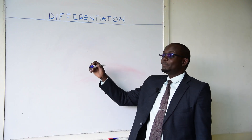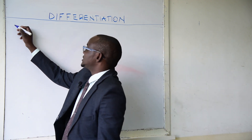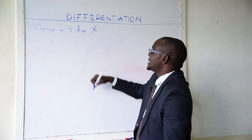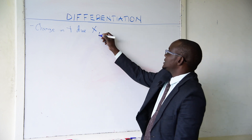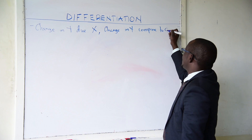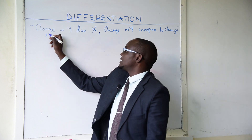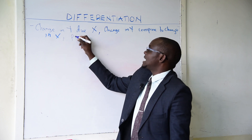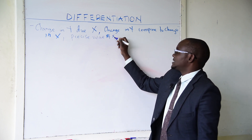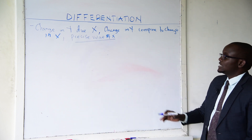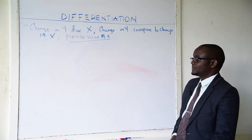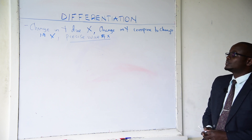Hello guys, today we learn about differentiation. When we talk about differentiation, we mean the change in y due to x — the change in y compared to change in x when x has a precise value. Here we look at the change of the dependent variable due to the change of the independent variable.